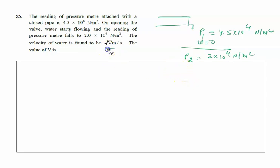The velocity of water is found to be √V. Let's say velocity is V. So this is V₁, this is V₂, at the same horizontal level.